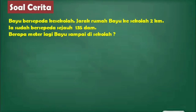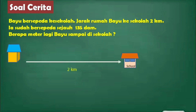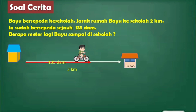Soal cerita selanjutnya. Bayu bersepeda ke sekolah. Jarak rumah Bayu ke sekolah 2 km. Ia sudah bersepeda sejauh 135 dekameter. Berapa meter lagi Bayu sampai di sekolah? Kita gambarkan dulu: jarak dari rumah Bayu ke sekolah adalah 2 km, Bayu sudah bersepeda sejauh 135 dekameter. Ini adalah sisanya dari jarak rumah Bayu ke sekolah, sehingga cara pengerjaannya adalah dikurangi.